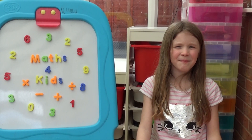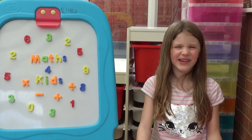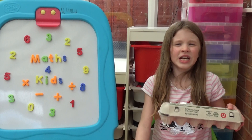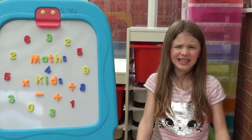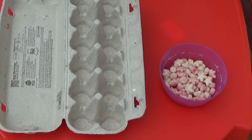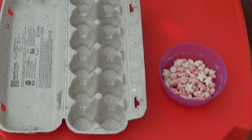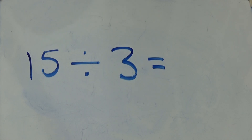Hi everyone, I'm Amber and today I'm going to show you how you can use an egg box to practice division. We're going to look at division as grouping and division as sharing. You need an egg box and something you can share out such as grapes, raisins, dried pasta or cereal pieces like I have here. We're going to look at 15 divided by 3 as both sharing and grouping using the egg box and cereal pieces.